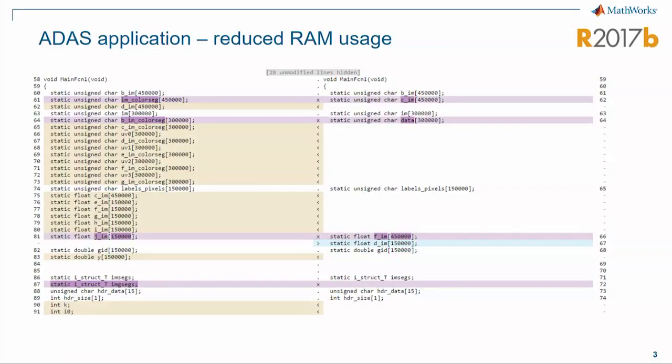This first example came from a customer application in ADAS. They were having problems because the generated code was using too much RAM and was not performing well enough on their target. We did a deep dive on their application and found several places where we could make improvements. You can see between the old code and the new code we greatly reduced the RAM usage in this example.